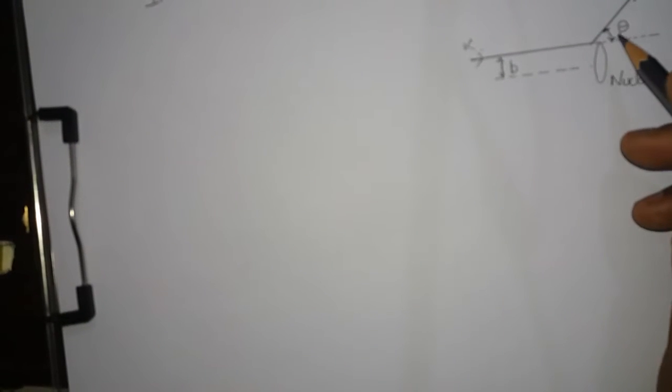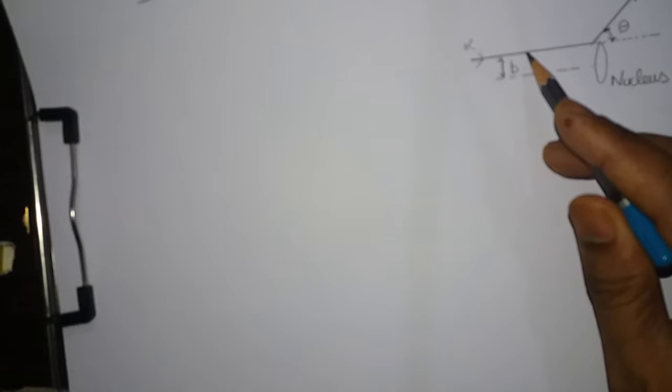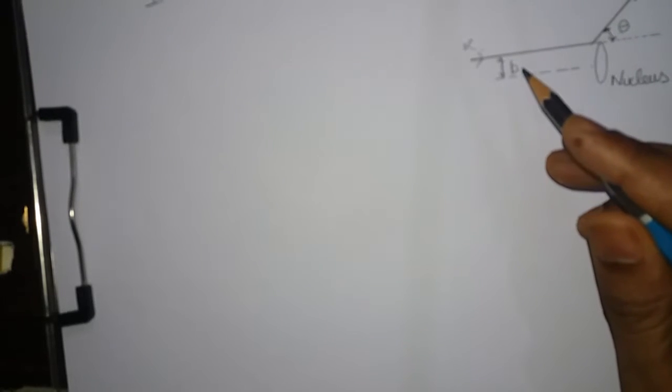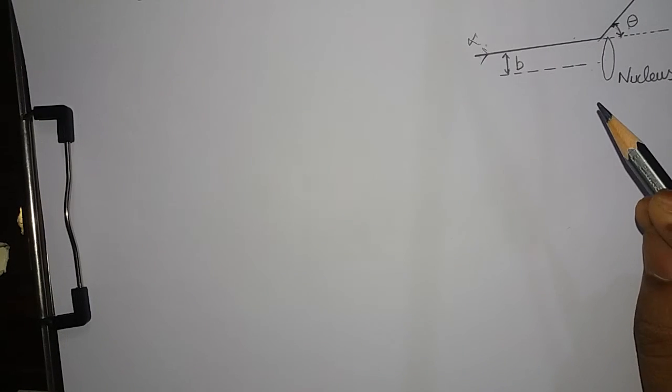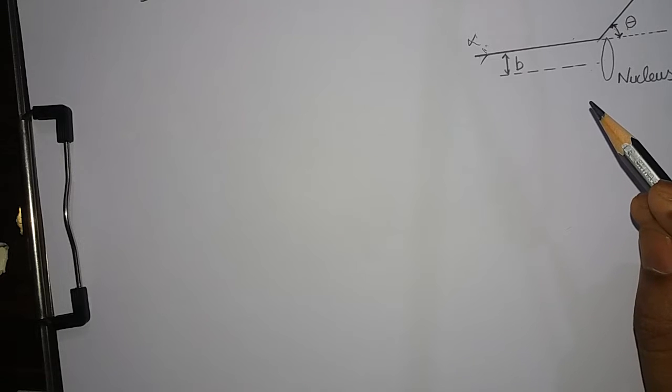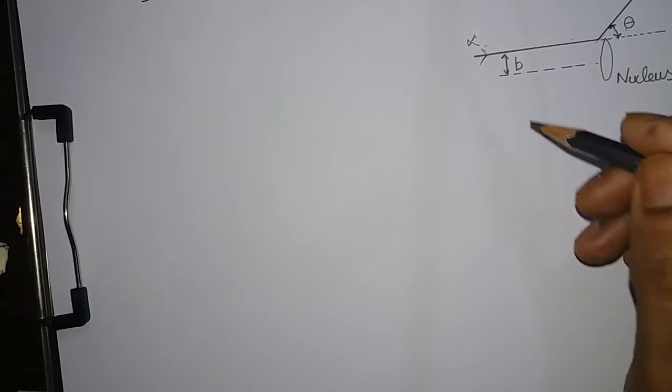The scattering of alpha particles from a nucleus depends on the distance of closest approach to the nucleus, or on the equivalent length called the impact parameter, that is B.